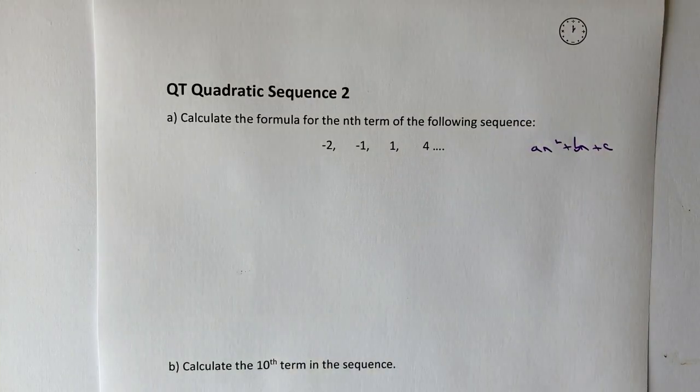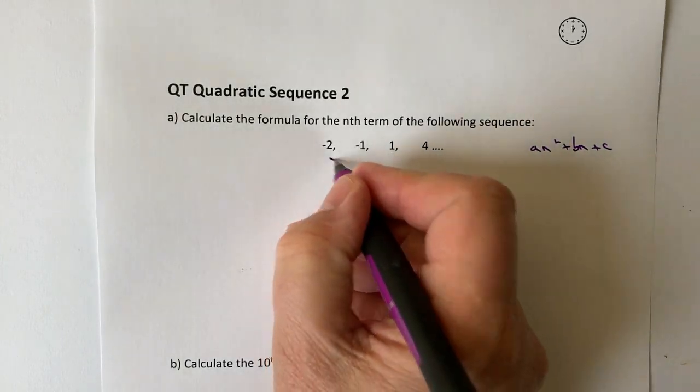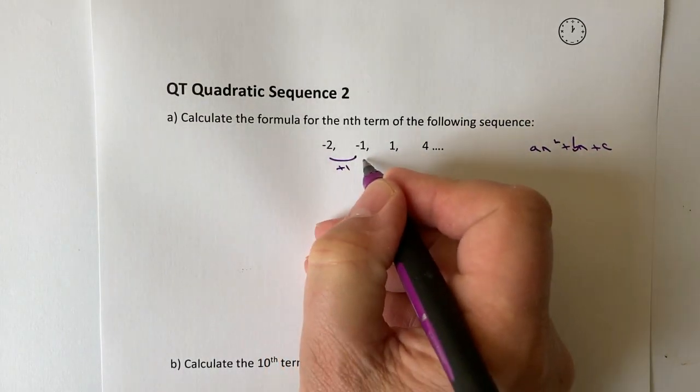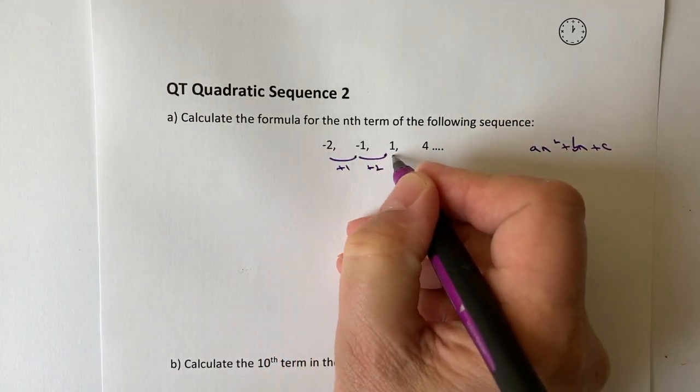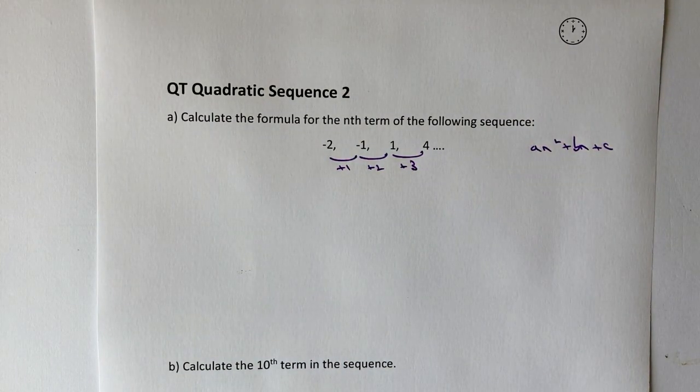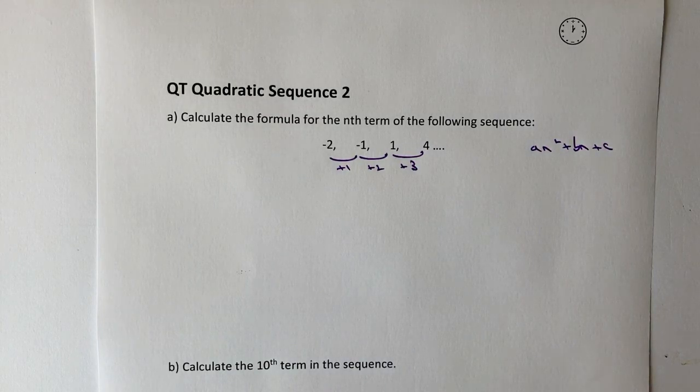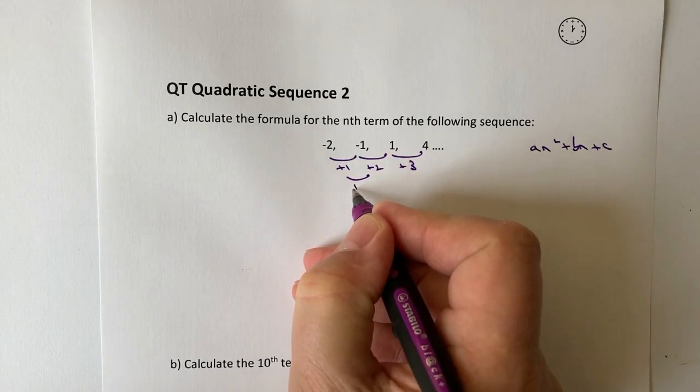Now the reason that's true is because this is a quadratic sequence, and although it won't tell you that on the actual question, what we've got is the first difference in this particular case is +1, and then it's going to be +2, and then it's going to be +3. So it's not a common difference or an arithmetic sequence, it's going to be quadratic because the second difference is going to be the same.